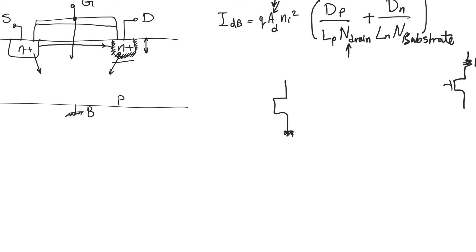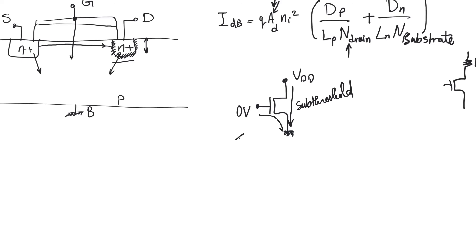To reiterate: leakage current is any current other than the Ids we derived using velocity saturation or pinch-off saturation. We are mostly concerned with leakage when we have a cutoff transistor — an NMOS with zero volts at the gate and a drain potential of Vdd. We should see zero current, but instead we see current flowing from drain to source (subthreshold conduction) and current flowing from gate to source (gate tunneling current).